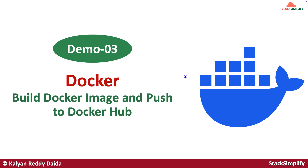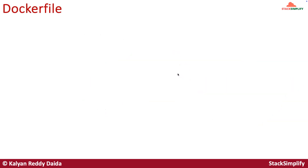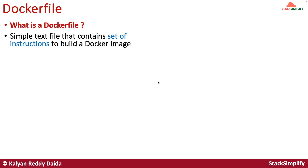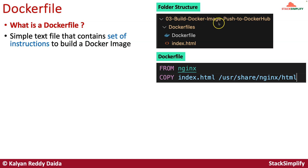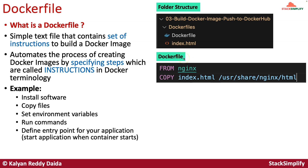Let's understand what docker files are in docker. Docker files are simple text files that contain a set of instructions to build a docker image. You will create a docker file with the name 'Dockerfile' inside a folder called docker files. Inside the docker file you define your instructions. This docker file automates the process of creating docker images by specifying steps called instructions — for example, COPY and others.